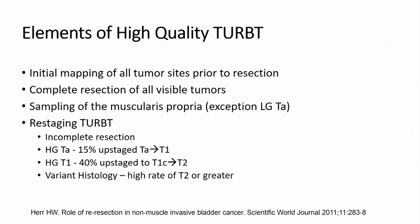The components include initial mapping of all tumor sites, complete resection of all visible tumor, sampling of the muscle where appropriate — an exception might be a low-grade TA — and then restaging. Restage for high-grade TAs, high-grade or any T1s, and certainly for the emerging understanding of the pitfalls of variant histology.